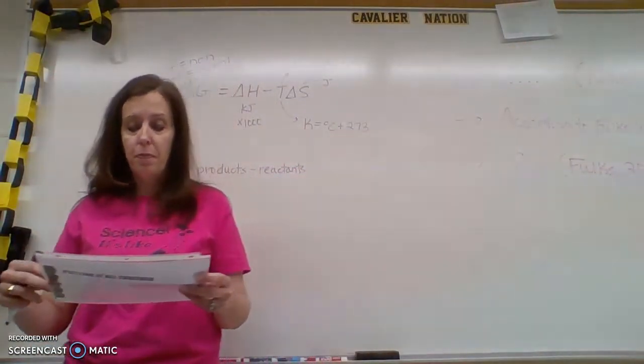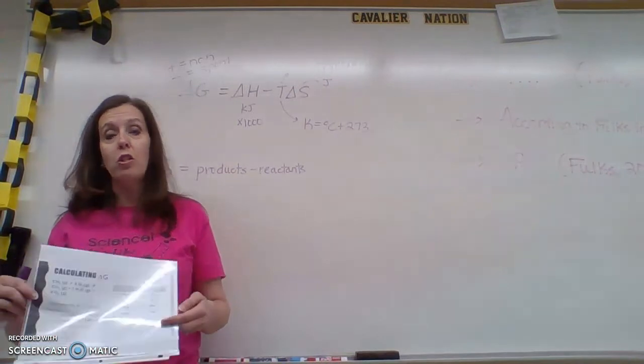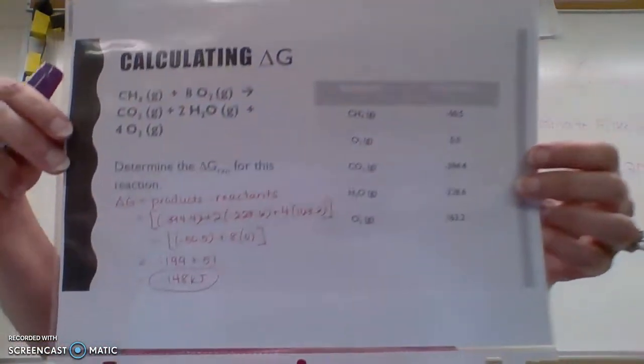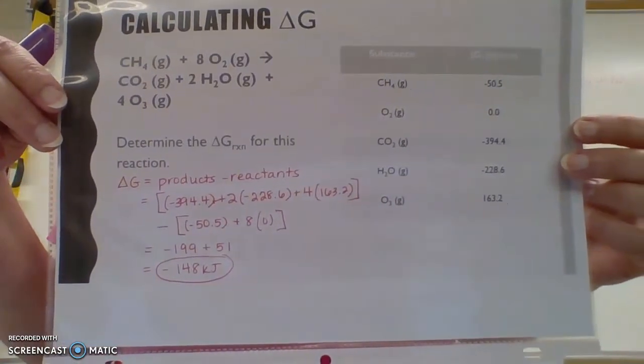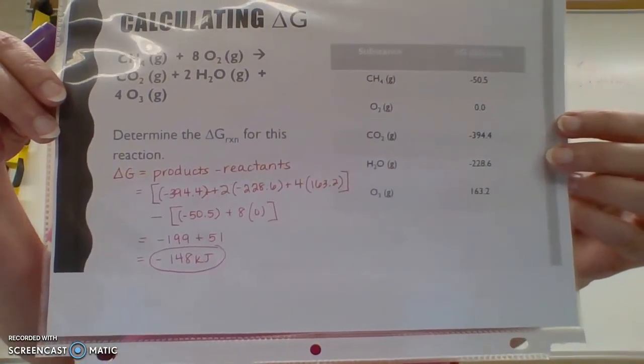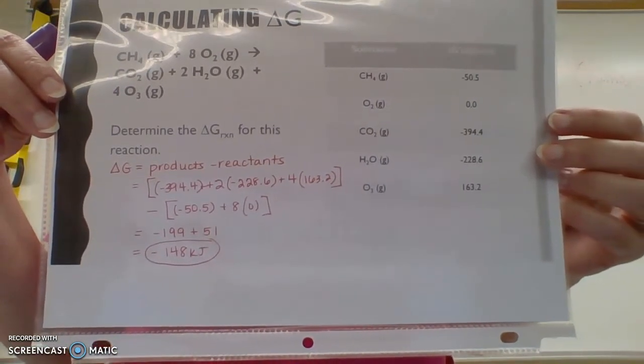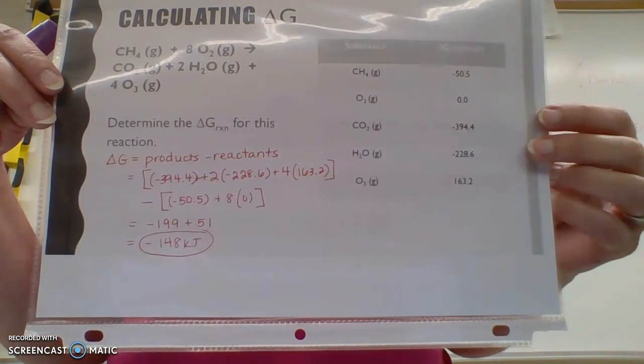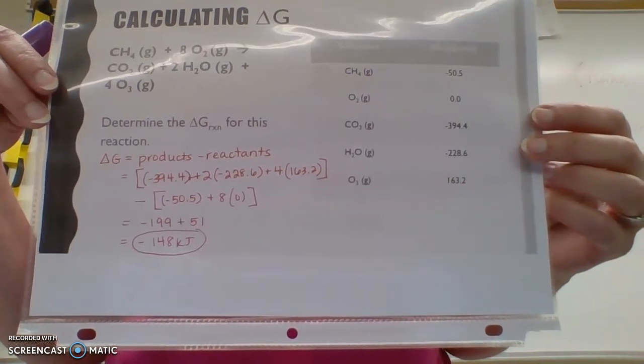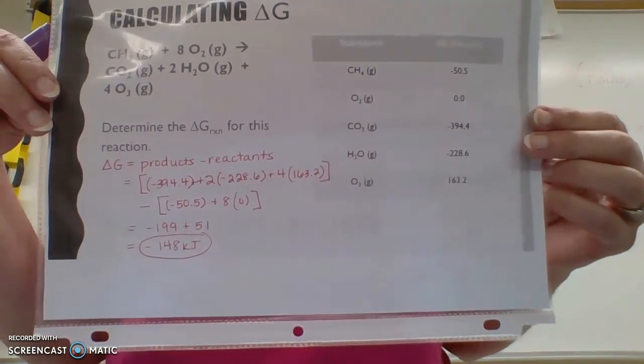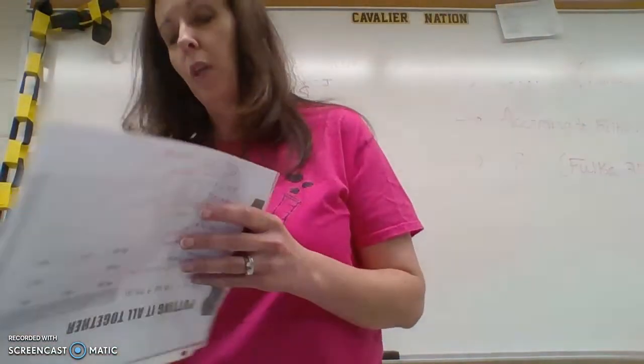Now, you can also do delta G calculations the same way. I can give you a table of delta G values, and you just do products minus reactants. So if I ask you for delta G, and there's no entropy or enthalpy, enthalpy is the delta H or the heat value, and I give you these delta G values, you can do products minus reactants.